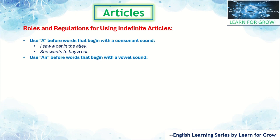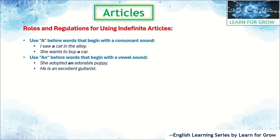The second rule: use 'an' before words that begin with a vowel sound. For example, 'Adopt an adorable puppy' — 'a' is a vowel, so we use 'an.' 'He is an excellent guitarist' — 'e' is also a vowel, so we use 'an.' The third rule: avoid using the indefinite article with non-countable nouns — 'I need some information' instead of 'I need an information' because information is non-countable.